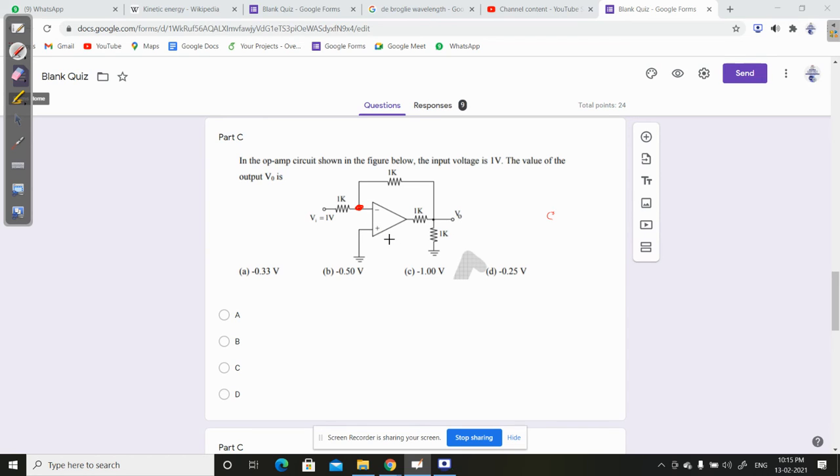Now, using the op-amp property, the two input terminals have the same voltage. This is ground, so the voltage is 0V at both terminals.